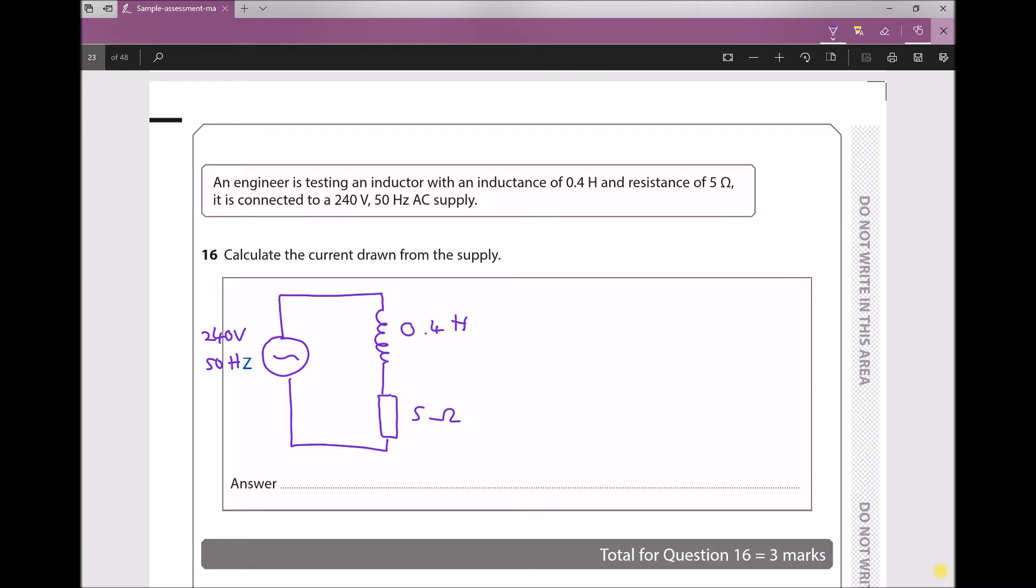Let's begin by calculating the reactance of our inductor, X. The formula for this is 2πfL. So the reactance of our inductor is 2π times the frequency, which is given as 50, times the inductance of 0.4. This inductor has a reactance equal to 125.66 ohms.